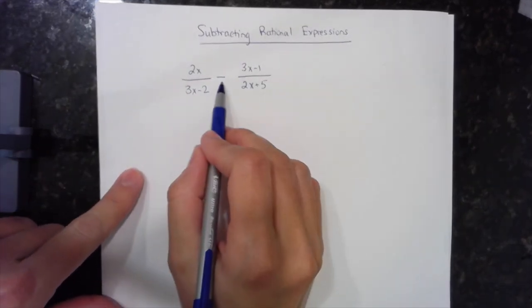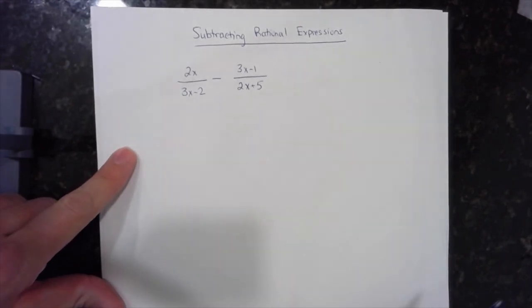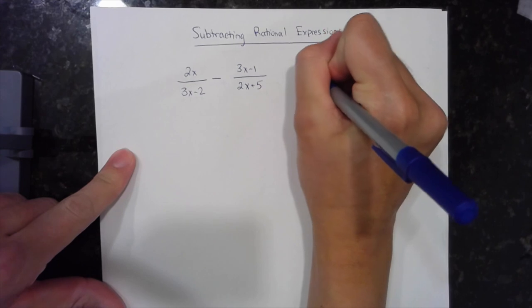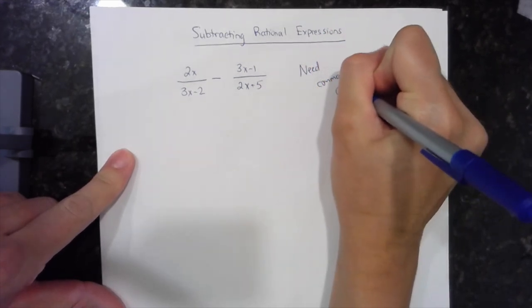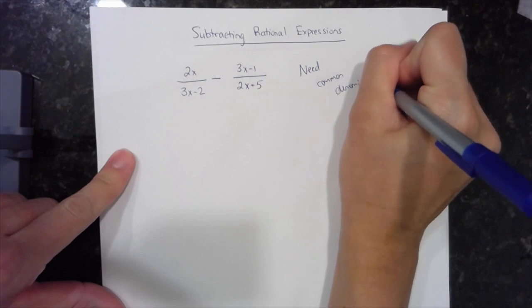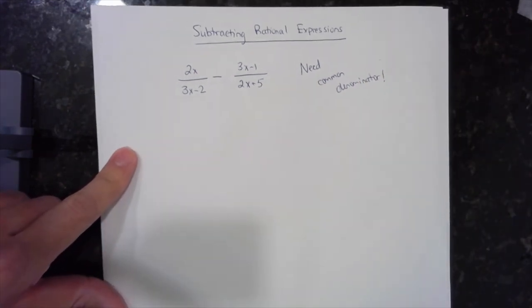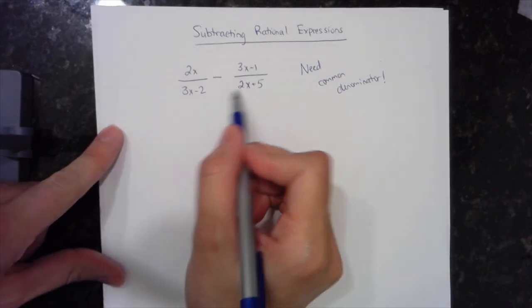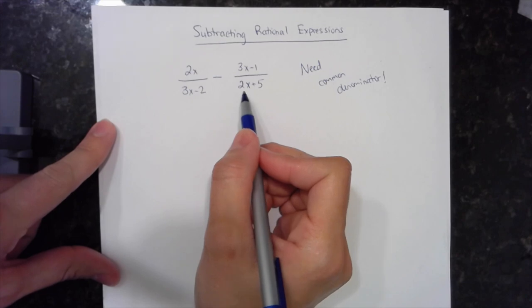So anytime we add or subtract rational expressions, it's the same idea as adding or subtracting fractions. We always need a common denominator. This is only when we're adding and subtracting fractions and rational expressions. So in a situation like this, the common denominator would be the product of the two denominators.